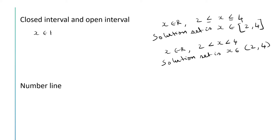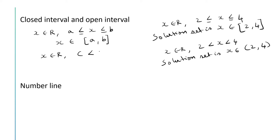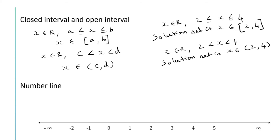For any real number x, if a ≤ x ≤ b then the solution set is x belongs to the closed interval [a, b]. On the other hand, if x is a real number and c < x < d, then the solution set will be the open interval (c, d). We can graph these solutions on a number line so that it will be easy to understand. This is the number line with negative x on the left and positive x on the right.